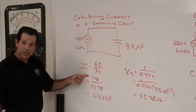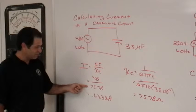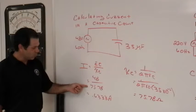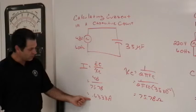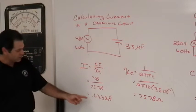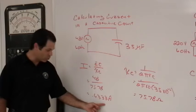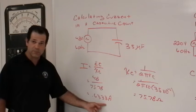The voltage, 48 volts divided by 75.78 ohms gives us 0.6333 amps. Or we can even say if we move it three places over 633 milliamps.